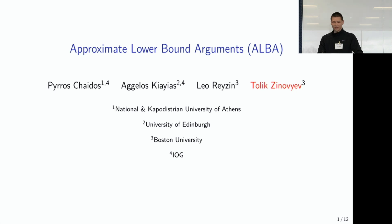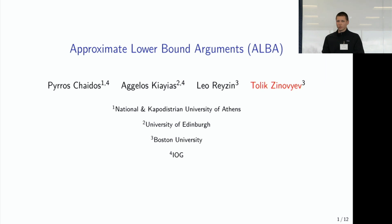Hello everyone. My name is Tolik, a PhD student at Boston University. I'll be talking about Approximate Lower Bound Arguments, or ALBA in short. This is joint work with Piros Chidas, Agilovsky-Is, and Leo Raisin.